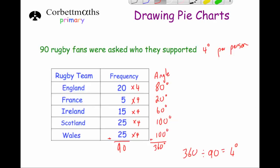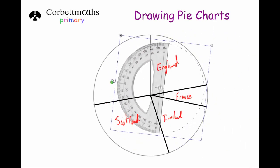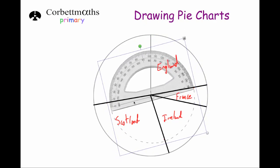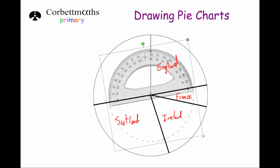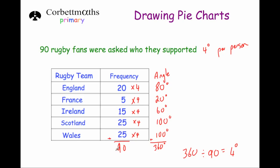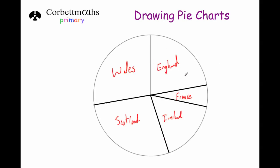The last section is for Wales and it should also be 100 degrees. If we get our protractor and move the zero to that line, we should find that the remaining angle is 100 degrees — and that's what we can see. So just label the last section Wales and we have drawn our pie chart. To recap: find the total frequency, divide 360 by that number to get degrees per person, multiply all frequencies by that answer to get the angles, draw a circle with a line from centre to top, then draw and label each section. And that's it.